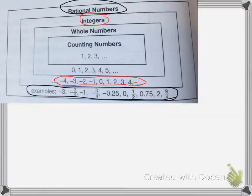Inside of that, we have whole numbers. Whole numbers are the numbers from 0 to positive infinity: 0, 1, 2, 3, 4, 5, and so on.